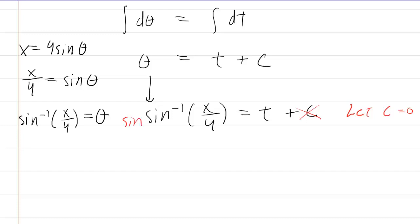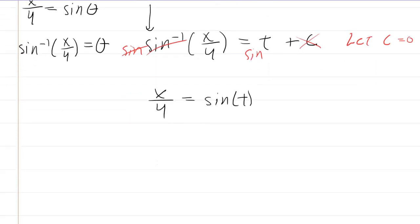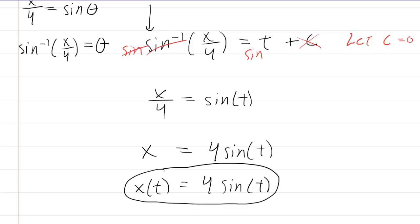The sine and inverse sine will cancel. You now have x over 4 is equal to the sine of t. And then finally, just multiply both sides of the equation by 4. You have x is equal to 4 sine of t. So that would be your final answer. You can also write this in function notation. You can say x as a function of time is equal to 4 sine of t.